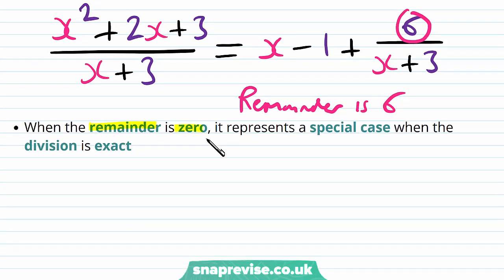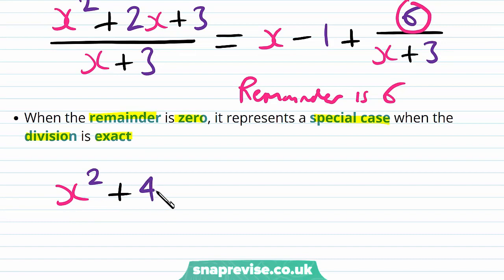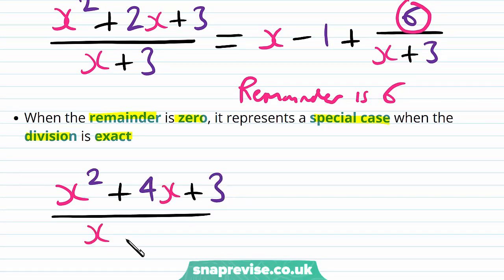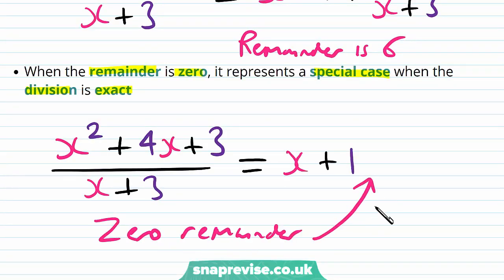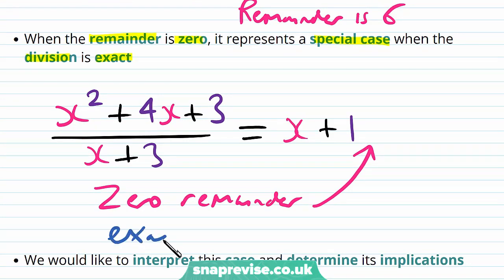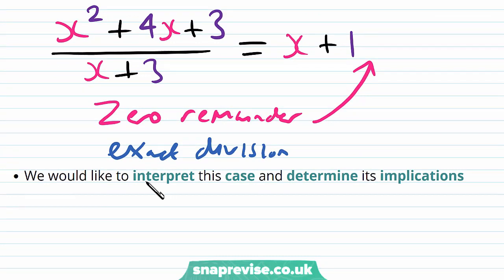When the remainder is 0 it represents a special case when the division is exact. If instead we have x squared plus 4x plus 3 and we divide by x plus 3 and we use polynomial long division, then we end up getting just x plus 1. There is a remainder of 0, and this is called exact division — not having any remainder. We would like to interpret this case and determine its implications.